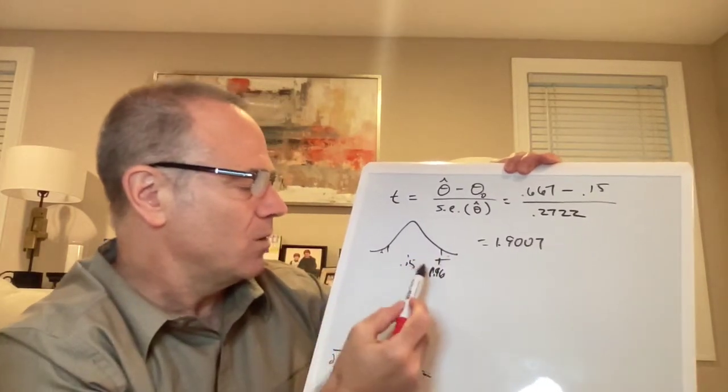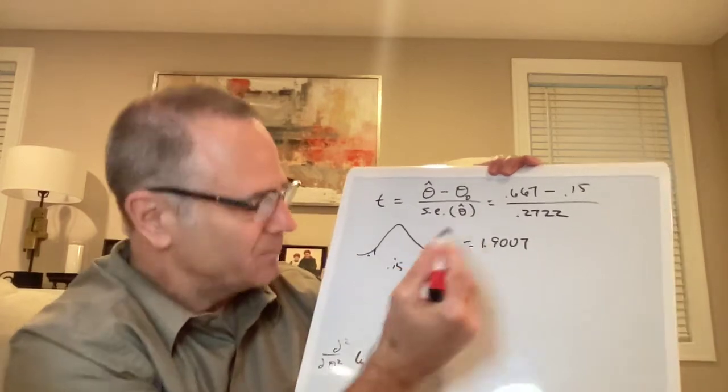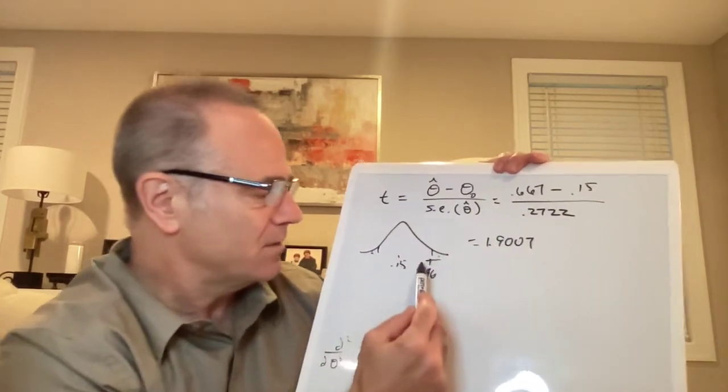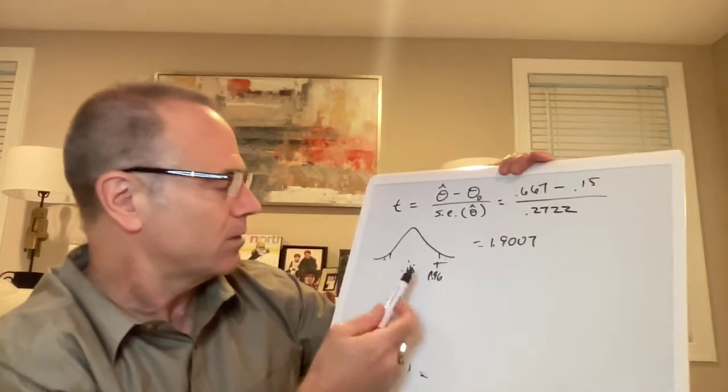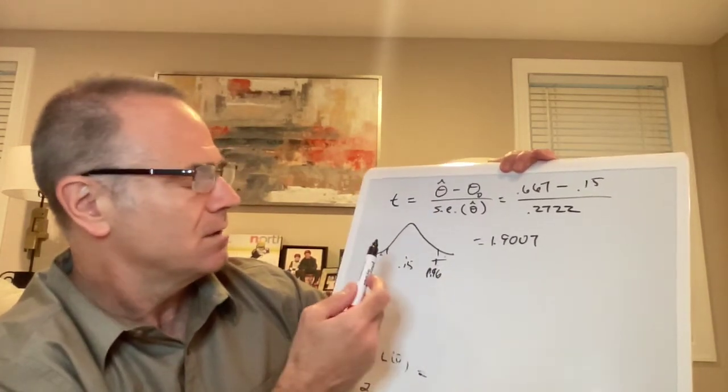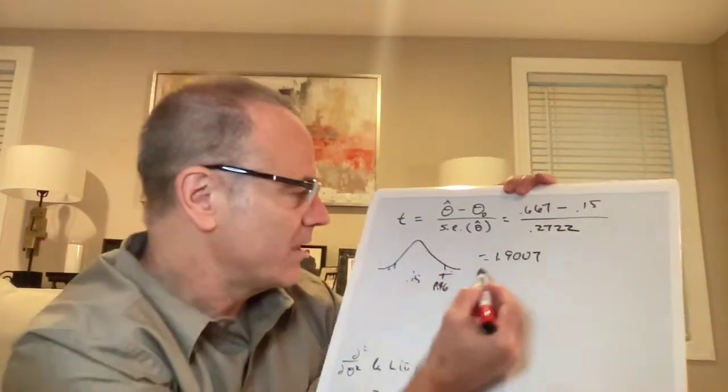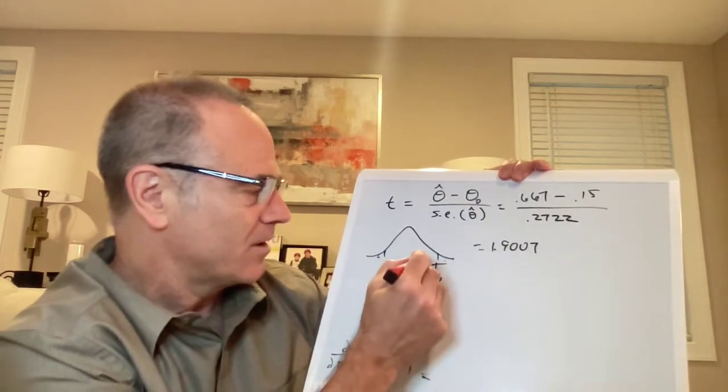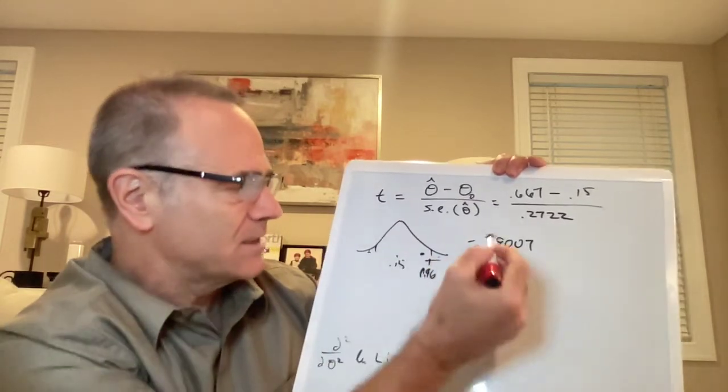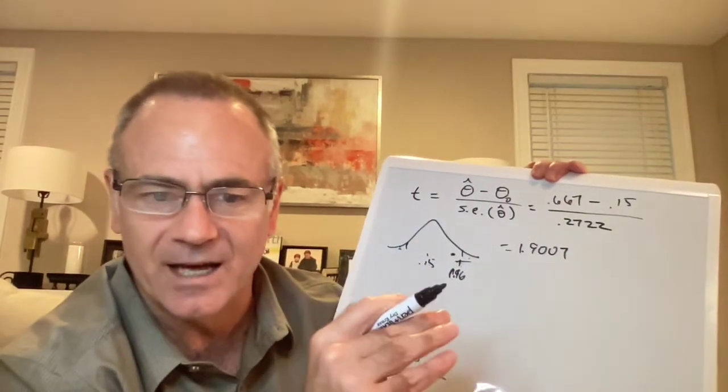So we'll reject if that t statistic is actually greater than 1.96, or on the other side, less than negative 1.96. But what do we get? 1.907, we did not reject. Our value, our t statistic is going to be something like right here. So in this case, we don't reject.